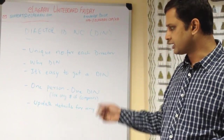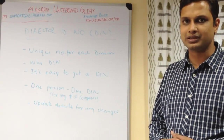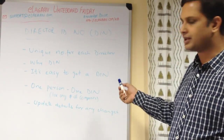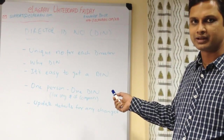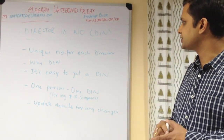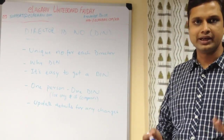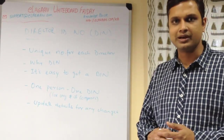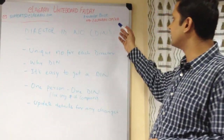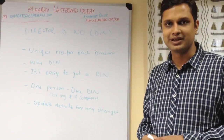If your DIN details are not updated, you can contact your Chartered Accountant or get in touch with us to make those changes. It is simple but also very important to do. That's all on Director Identification Number. For any other queries, you can contact us at support@elagan.com or check out our knowledge base at elagan.com. Thank you.